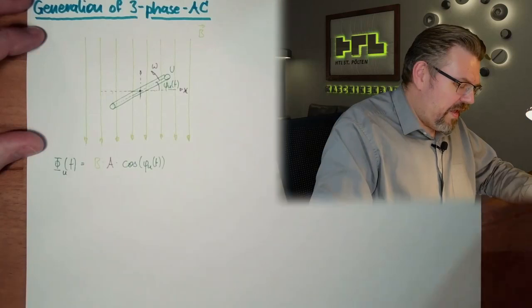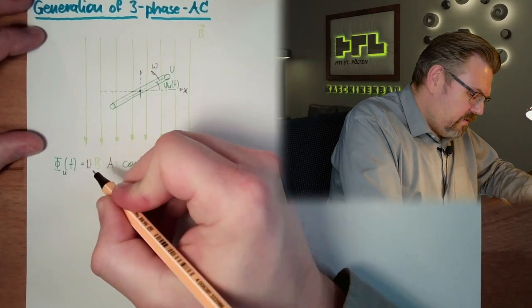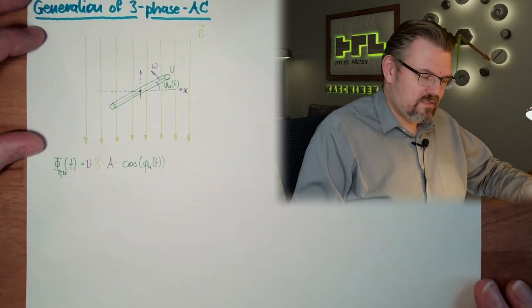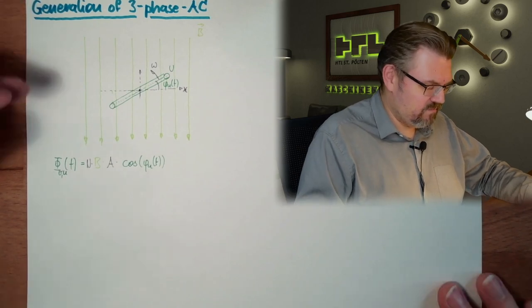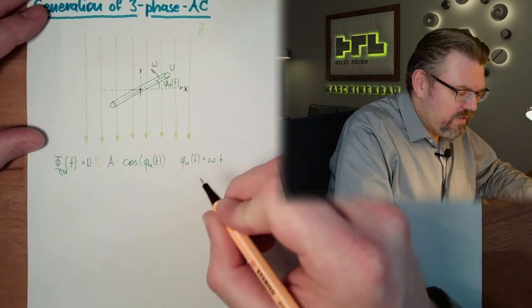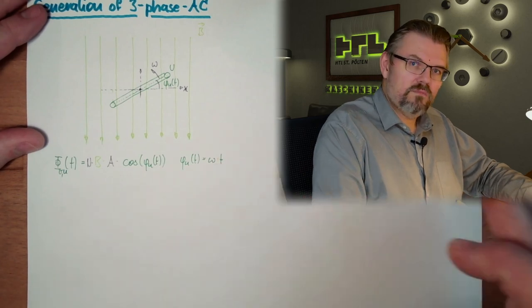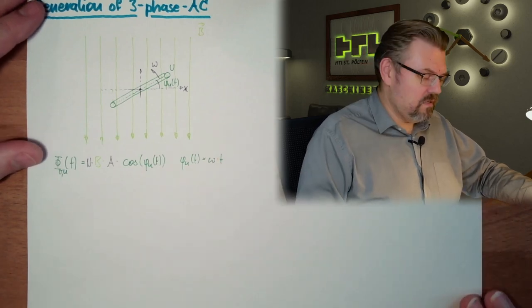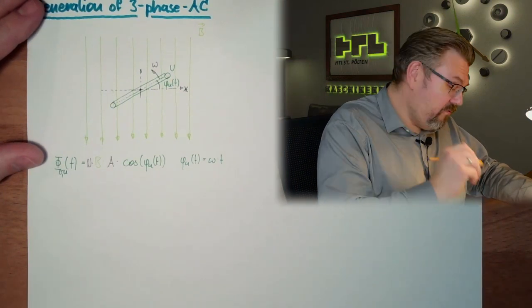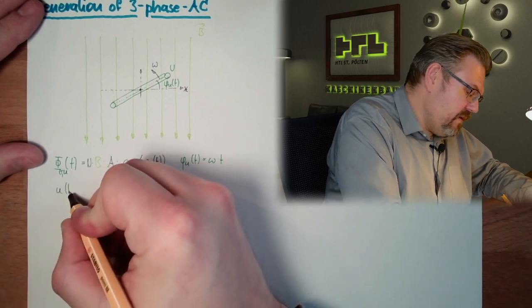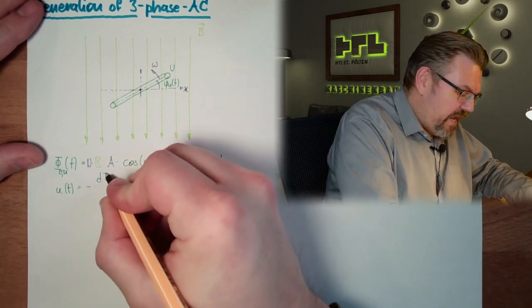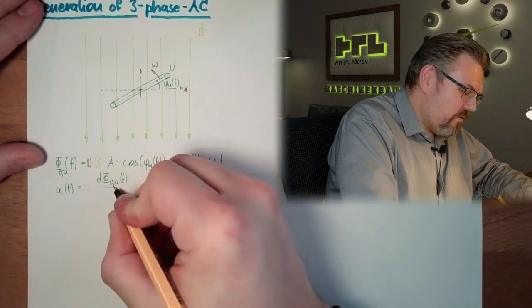And now I will also multiply this with N, because I have not only the flux, I have the combined flux through all the windings there. This is my flux. And my phi U equals omega multiplied by T, angular velocity multiplied by time is the angle. Now let's have a look what is happening for our voltage. We have here U(t). According to the law of induction, this is minus the change rate, the negative change rate of the combined flux.